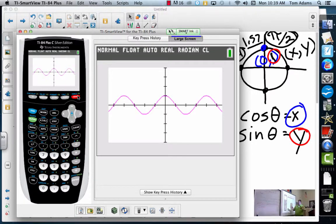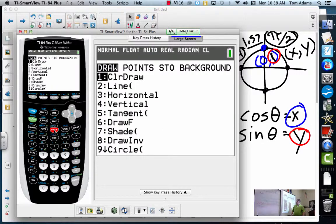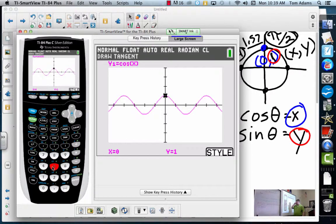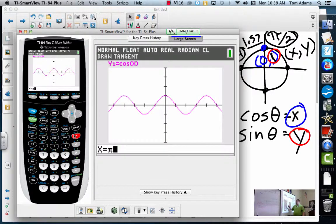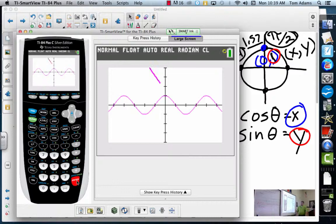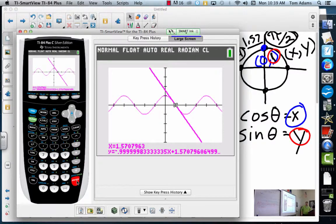And so by using this linear approximation, if I hit second, draw, and I choose 5 for tangent, and I choose second π divided by 2, I'm using the tangent line of the curve at π/2 to approximate that value.